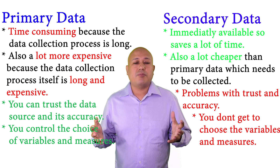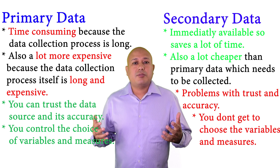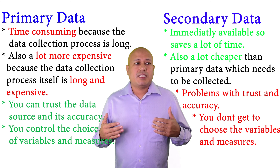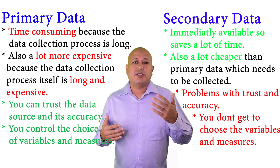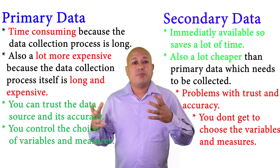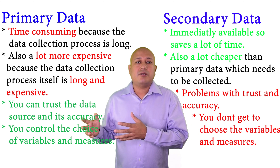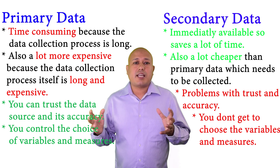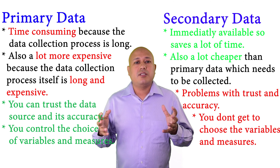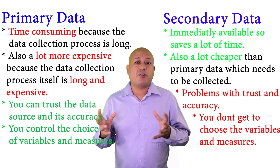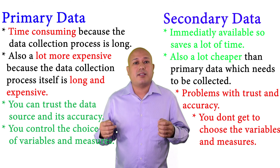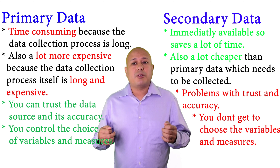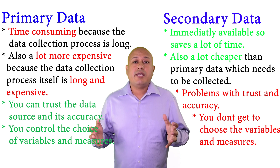Similarly with demographics, if you need age ranges of 16–25, 26–35, and 36–45, but the secondary data was collected using ranges of 20–30, 30–40, and 40–50, it doesn't specifically fit your research needs. While it might still provide some useful information, it's not exactly the data you're looking for, which is another problem with secondary data.